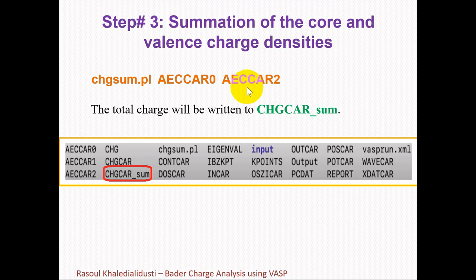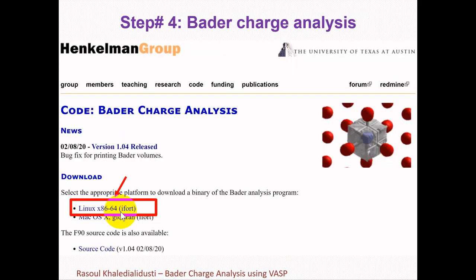The total charge density, which is the summation of the core and valence charge densities, will be written to CHGCAR_sum. By using this script, we can obtain the summation of the core and valence charge densities of our atoms in the system. Now we have the summation of core and valence charge densities of all elements in CHGCAR_sum. The next step is to run the Bader charge analysis program.